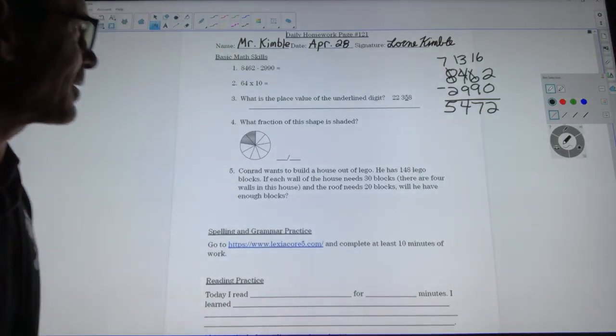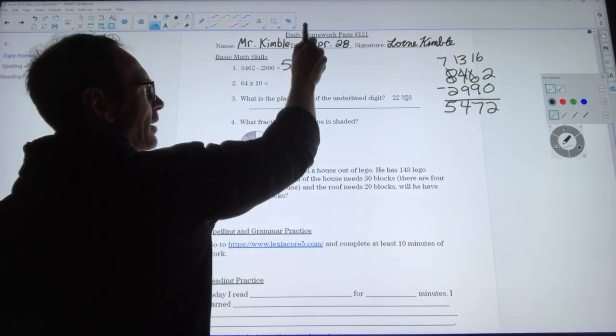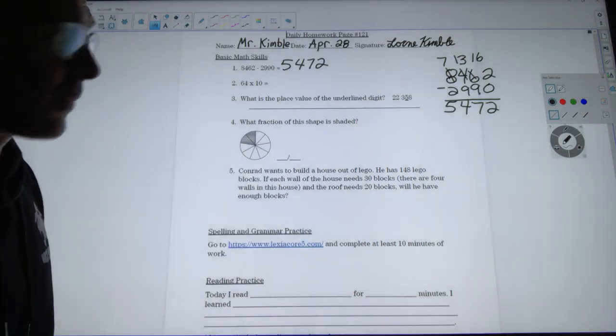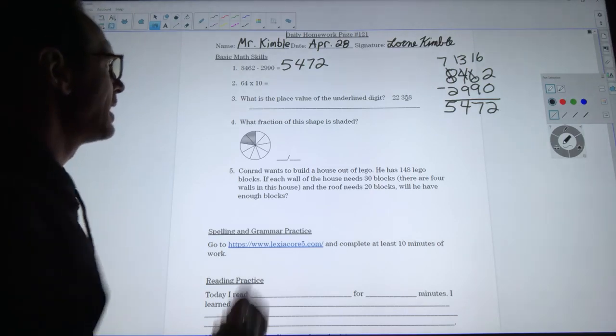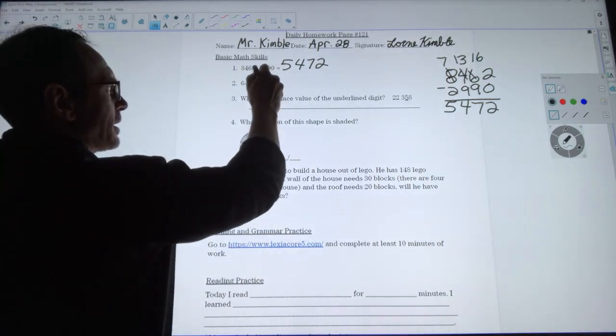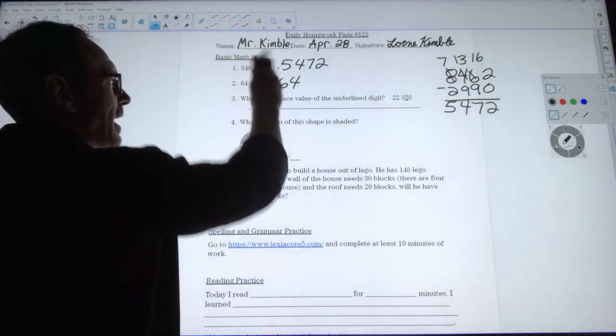Now 64 times 10. Remember when we've been dealing with multiplying by 10, if we just look at 64 times 1 that's 64, so 64 times 10 would be 64 with a zero on the end, 640.